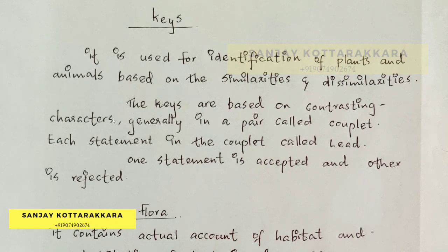For example, one factor or character we consider is height. Height has two contrasting traits — one is tallness and the other is short. These two are contrasting traits.